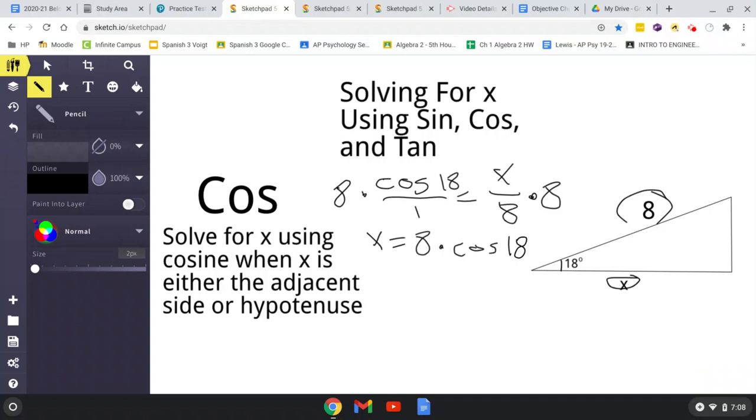But anyways, to solve, just press cosine of 18 times 8. And that will be your x value. I got 7.608. That is our x value right there. So, this side right here equals 7.608.